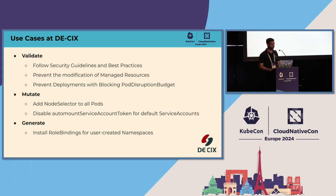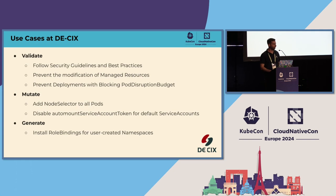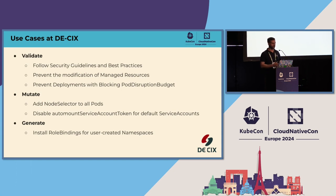At DE-CIX, since we provide teams with managed Kubernetes clusters and want them to deploy their stuff by themselves, we use Kyverno to prevent them from deploying privileged containers, and from deploying services of type NodePort or LoadBalancer, so they don't expose traffic to the internet without going through our network team. We also prevent modification of managed resources — for example, teams cannot change the ingress controller image version in the managed namespaces we provide.